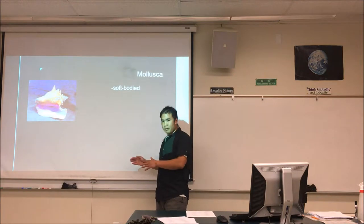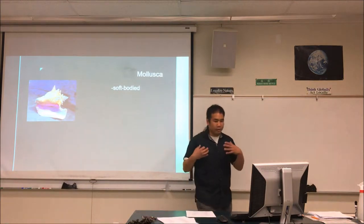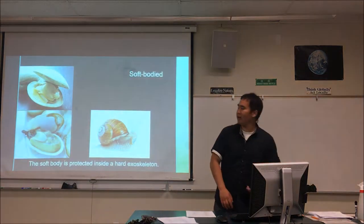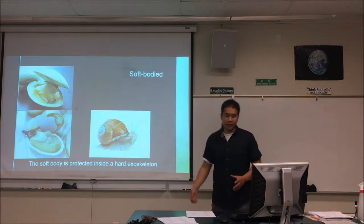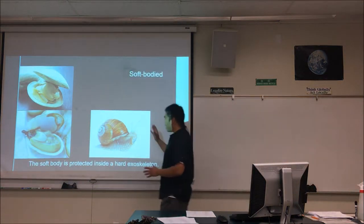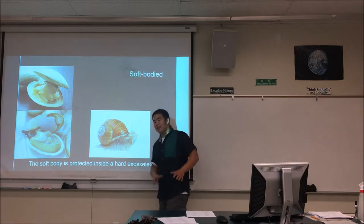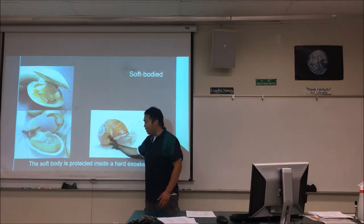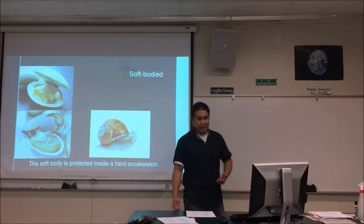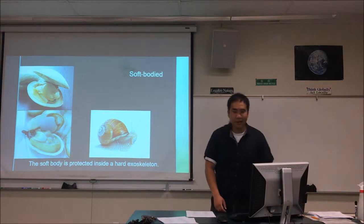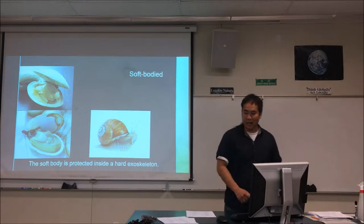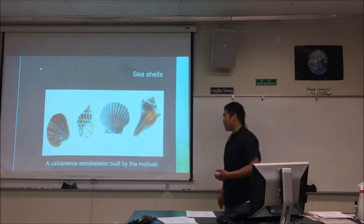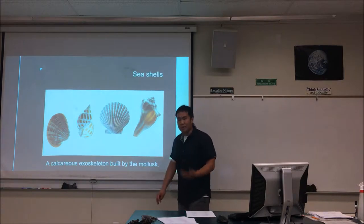All mollusks have soft bodies, and if they have a soft body, they have to protect it. Most of them have a hard exoskeleton — basically a shell. And that shell is made out of calcium carbonate. A seashell is probably the easiest example of what calcium carbonate is.